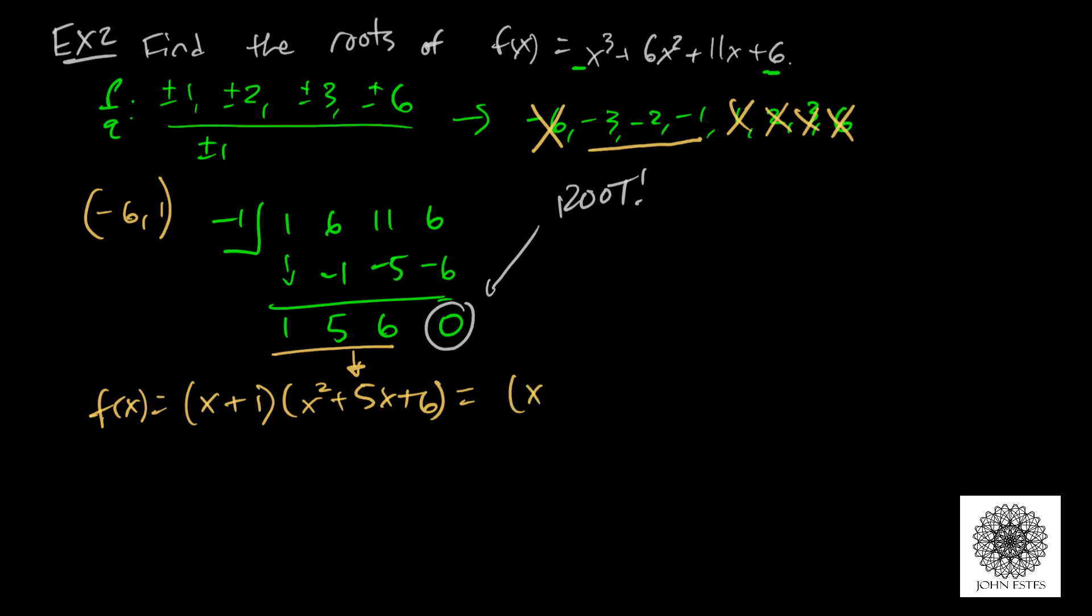I can factor that because it's a quadratic. Two things that multiply to give me 6 and add to give me 5. How about 3 and 2? Notice that these are the exact three roots that I get here.